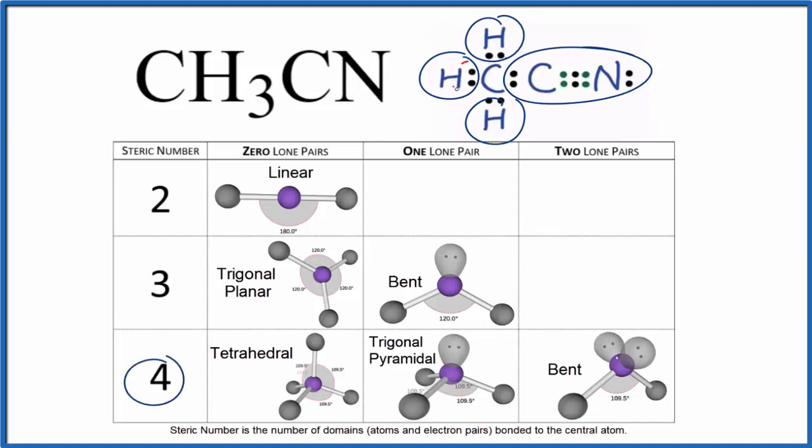So we have four things, all these electrons are in chemical bonds. We have zero lone pairs. That would be tetrahedral, and the bond angles would be 109.5 degrees.